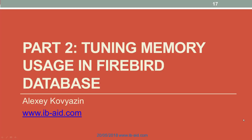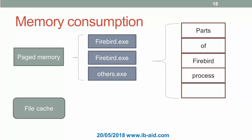In the second part of our webinar devoted to memory usage in Firebird, we will discuss how to tune memory consumption and discuss optimal values for various Firebird configuration parameters related with memory. We need to tune the size of Firebird processes and file cache usage in order to align them with the operating system defaults for paged memory and file cache.